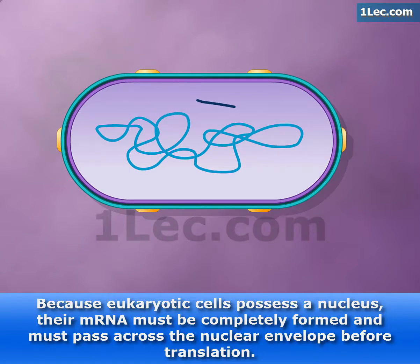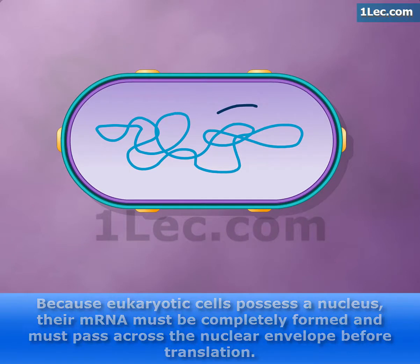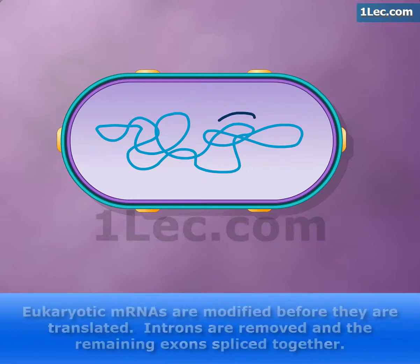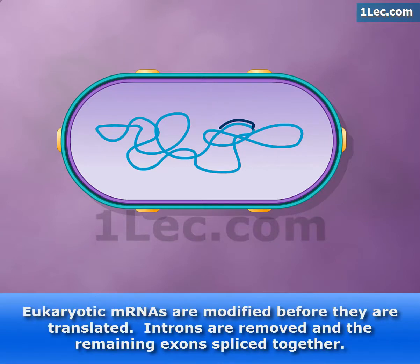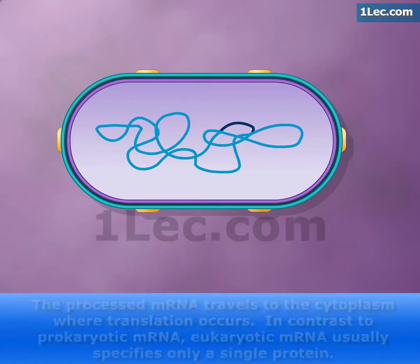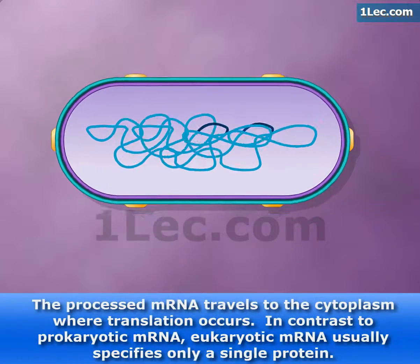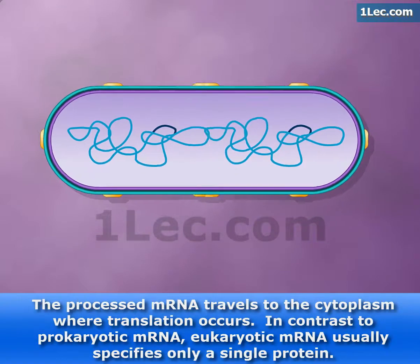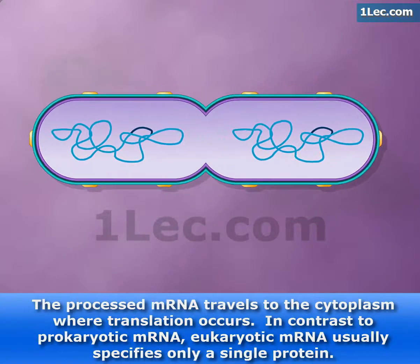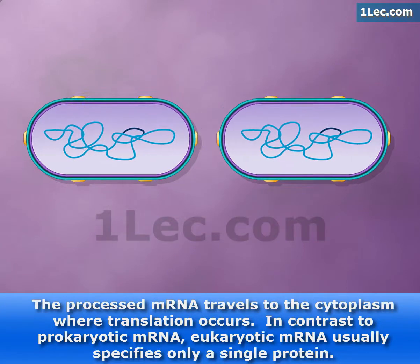When the bacterial DNA is introduced into the new host cell, it can become integrated into the bacterial chromosome, thereby transferring genes to the recipient. This cell then multiplies and carries the new genetic material.